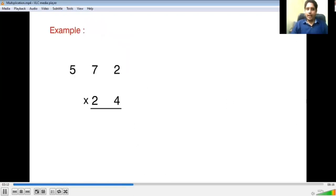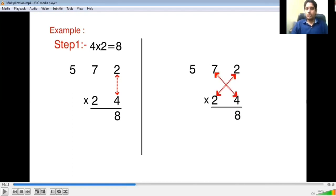So let us proceed and take an example of a 3 digit number multiplied with a 2 digit number. Now I am going to multiply 572 and 24. Step 1: 4 and 2 will get multiplied with each other. 4 into 2 is 8, we have 8. Step 2: you will have 4 go to 7, and because it is the second step, 2 starts with 2. So 4 into 7 is 28, 2 into 2 is 4. 28 plus 4 is 32.